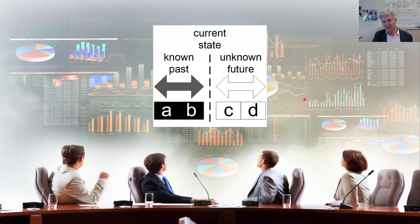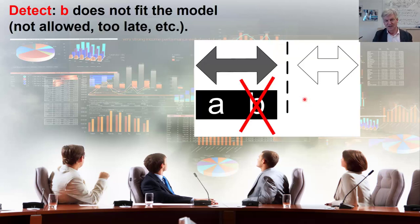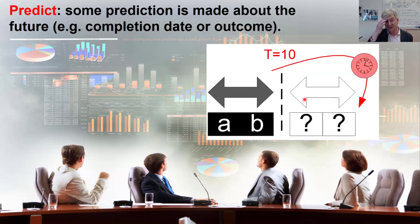Consider a running case where activities A and B have been executed. C and D will happen in the future but are uncertain. In the detect scenario, the moment a deviation occurs you want to generate an alert — for example that something is too late, not allowed, or executed by the wrong person. In the predict scenario, having already executed A and B, we would like to predict the outcome or the completion date of that case. In the recommend scenario, after executing A and B, we know certain activities are possible and would like to recommend the one that minimizes cost or minimizes flow time.